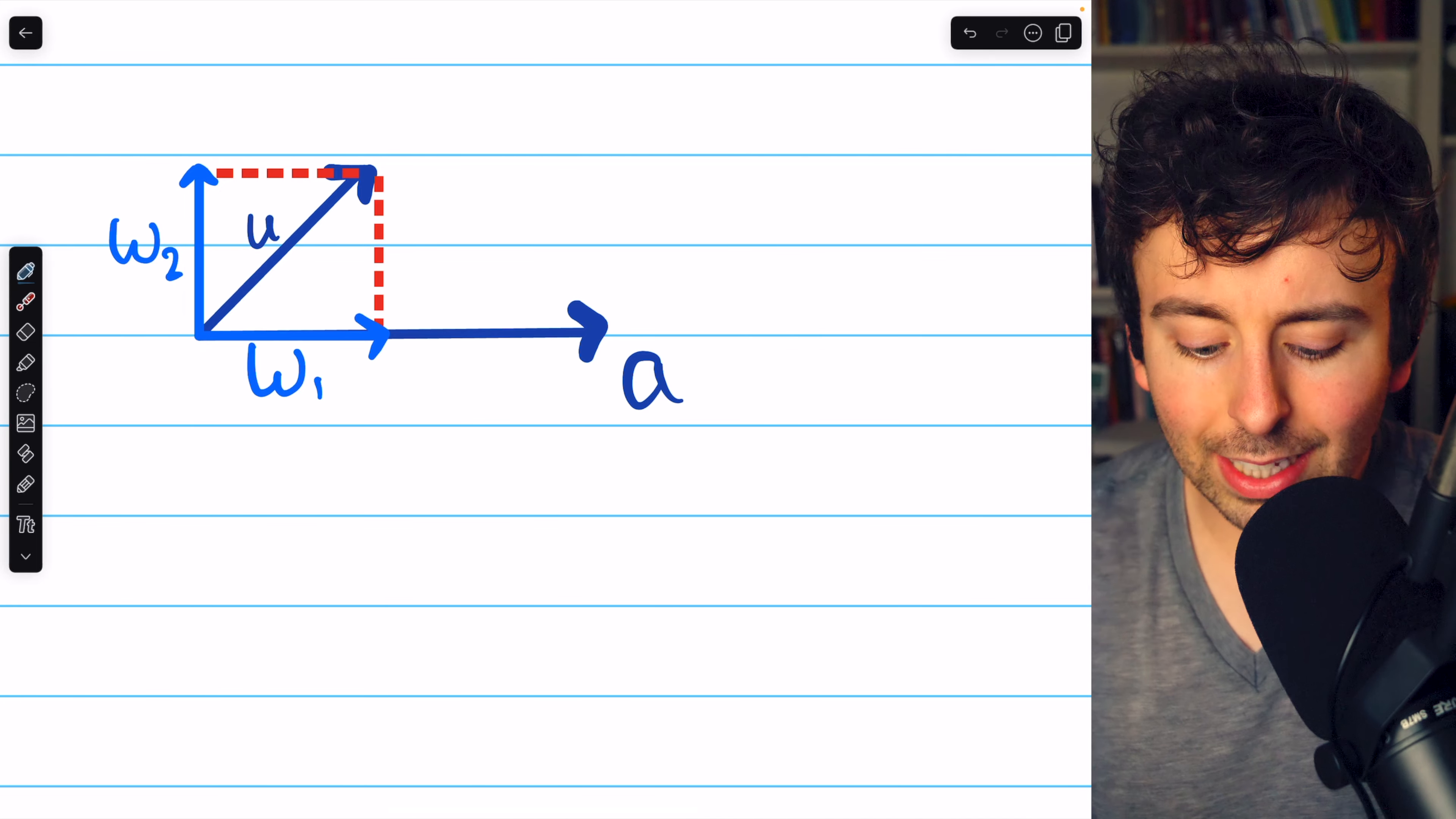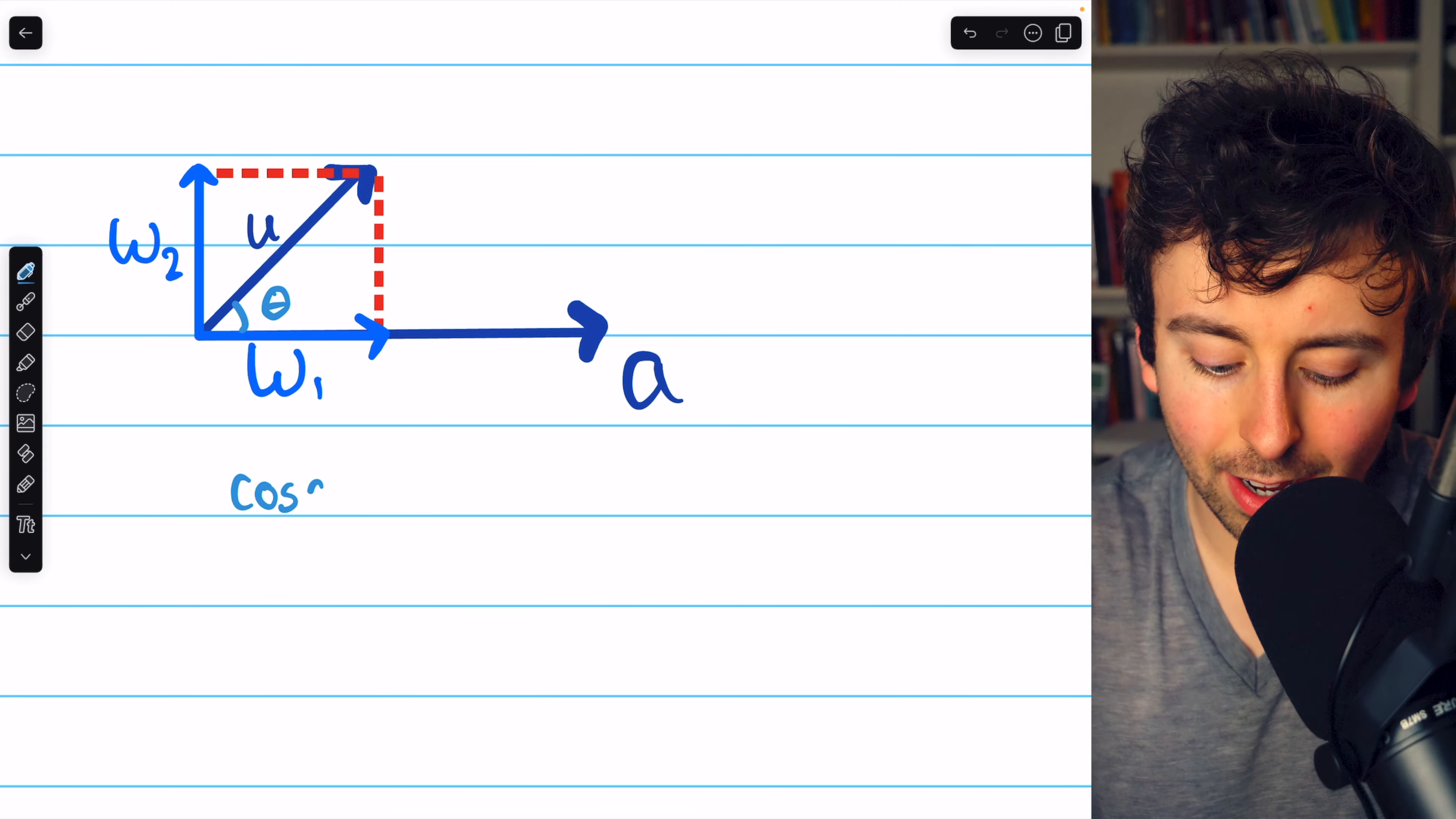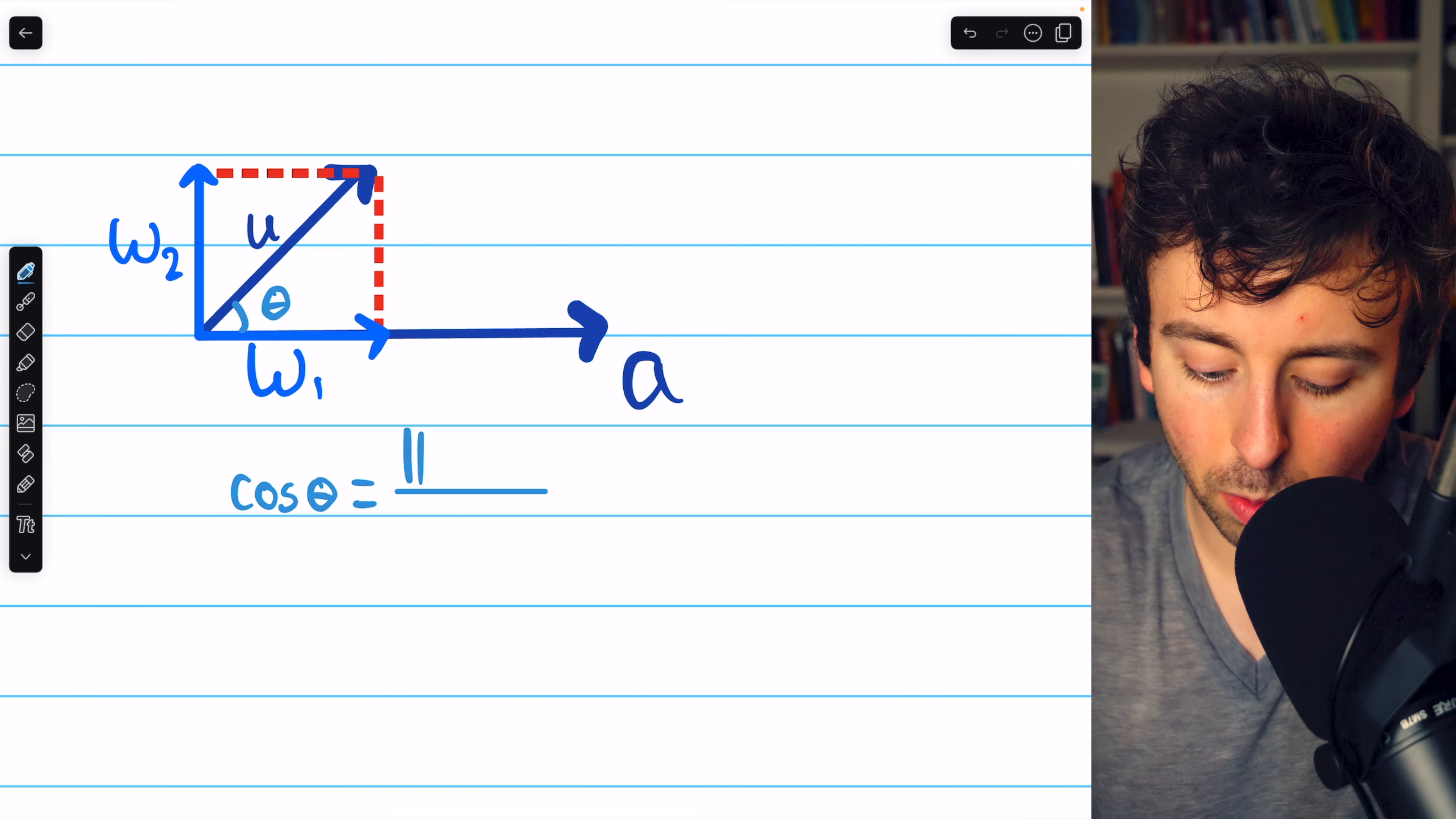This will take a little bit of trigonometry. Let's say the angle between u and w1 is theta. Cosine theta is adjacent over hypotenuse, so we could write that this is the magnitude of w1 divided by the magnitude of the vector u. So then the magnitude of w1 is just cosine of theta multiplied by the magnitude of u.